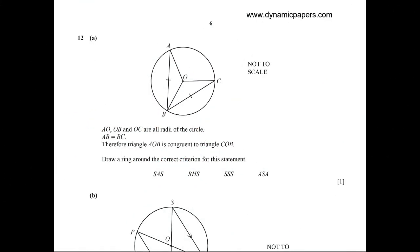Question 12: to prove congruency, we need to know the case. We have two sides equal, these two sides are also equal because they are two radii in the same circle, and OB is a common side. So the two triangles are congruent and the case of congruency is side-side-side.